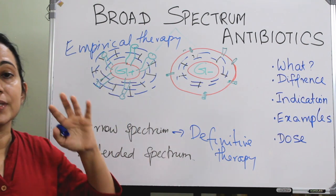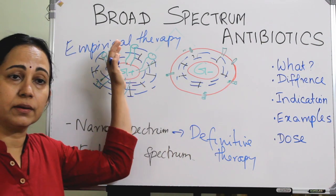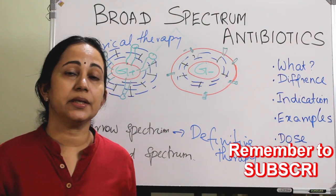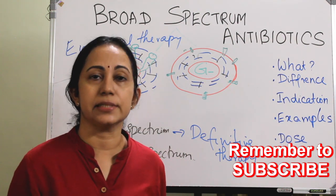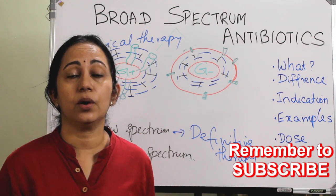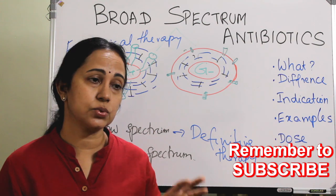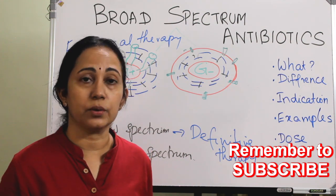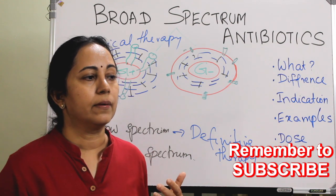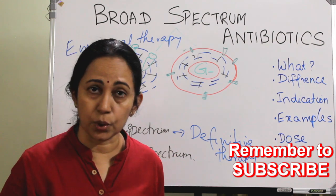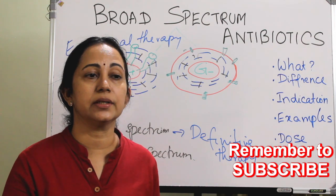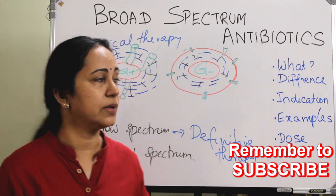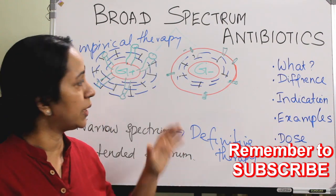What is empirical therapy and what is definitive therapy? Definitive therapy is when we know the exact pathogen causing the disease — the pathogen is isolated or we know what organism is causing the disease — so that we can give the correct antibiotic. When there is no evidence, or when the pathogen cannot be isolated, or when the exact organism causing the disease is not known — like in an ICU setting or when there is a very high grade infection and we cannot wait to start the antibiotic — in such cases we give broad spectrum antibiotics. That is called empirical therapy.